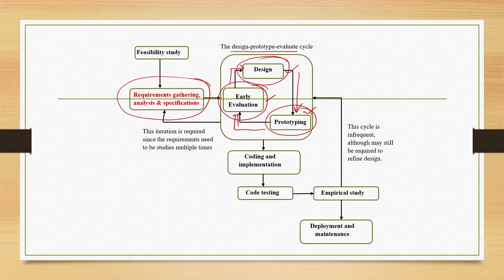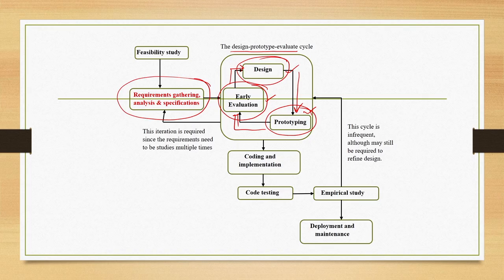One thing to note here is that design refers to both the design of the system and the design of the interface and interaction. There are two distinct things: one is the interfaces and interactions, which is the way a user views the system, and the other is the actual system, which is the way a developer or programmer views the system. In this cycle we refer to both — first we finalize design of the interfaces and interactions, and afterwards we finalize the system design.